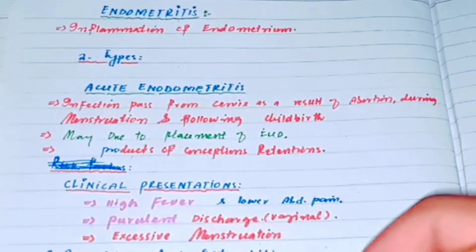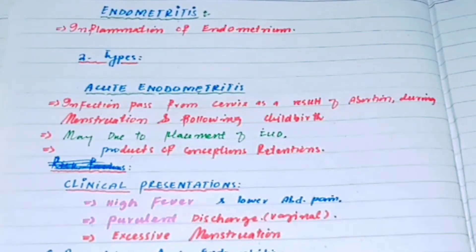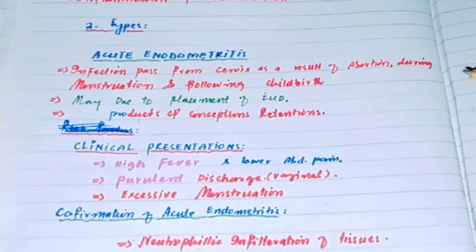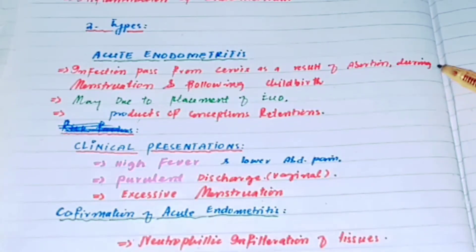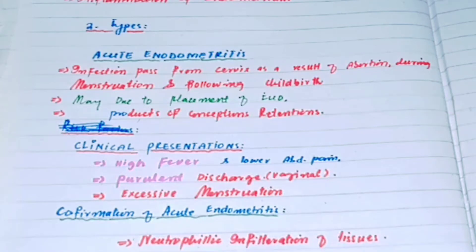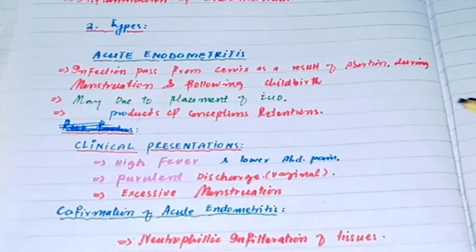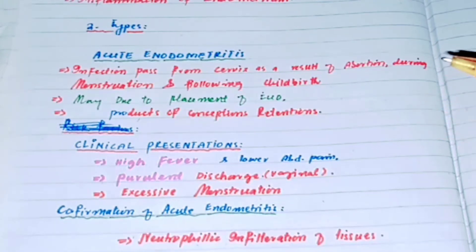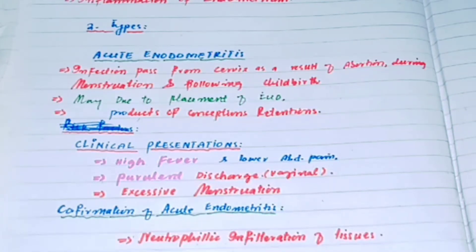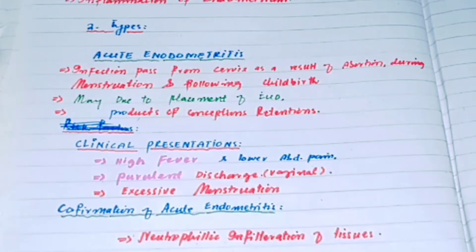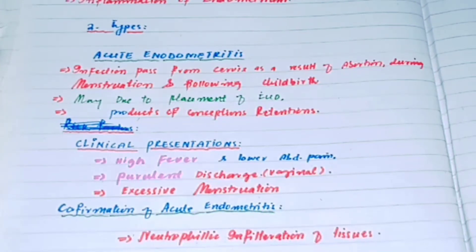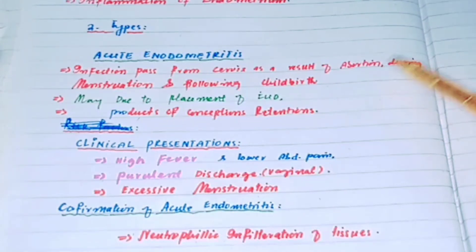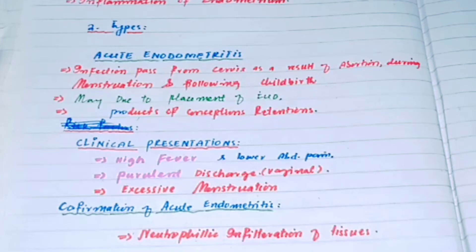Acute endometriosis normally occurs when clean hygienic conditions are not followed during abortion, menstruation, or childbirth. This will cause organisms to pass from the cervix into the endometrium and cause endometriosis. So these infections during abortion, menstruation, and following childbirth will cause infection in the endometrium.